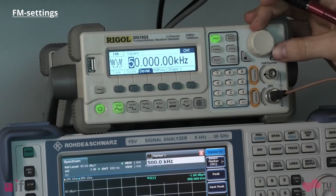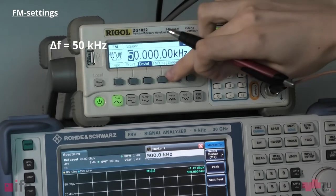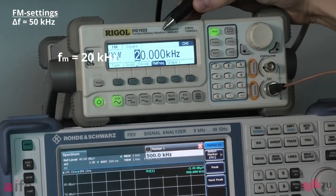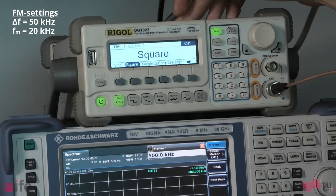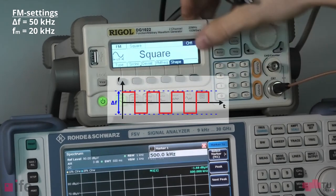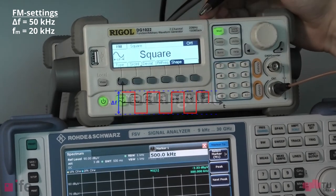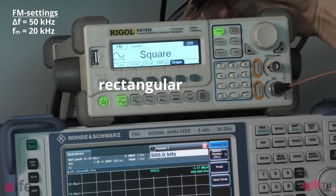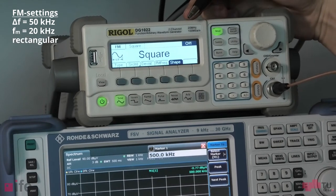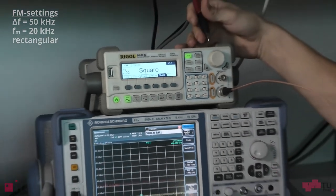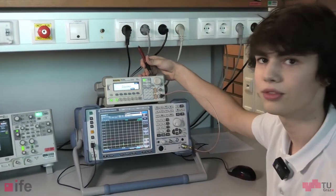I've set a deviation of 50 kilohertz, a modulation frequency of 20 kilohertz and I'm going to use a rectangular wave as a modulation shape. So now our 500 kilohertz signal will just jump between 450 and 550 kilohertz at a rate of 20 kilohertz.